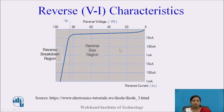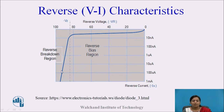These are the reverse VI characteristics of the P-N junction diode. At the initial condition, a very small reverse current flows, called the saturation current. This current is due to the minority charge carriers which are thermally generated, meaning it depends on temperature, not on reverse voltage. So even with an increase in reverse voltage, the current remains constant. After one particular voltage, the current increases rapidly — that voltage is called the breakdown voltage, where breakdown of the P-N junction takes place.